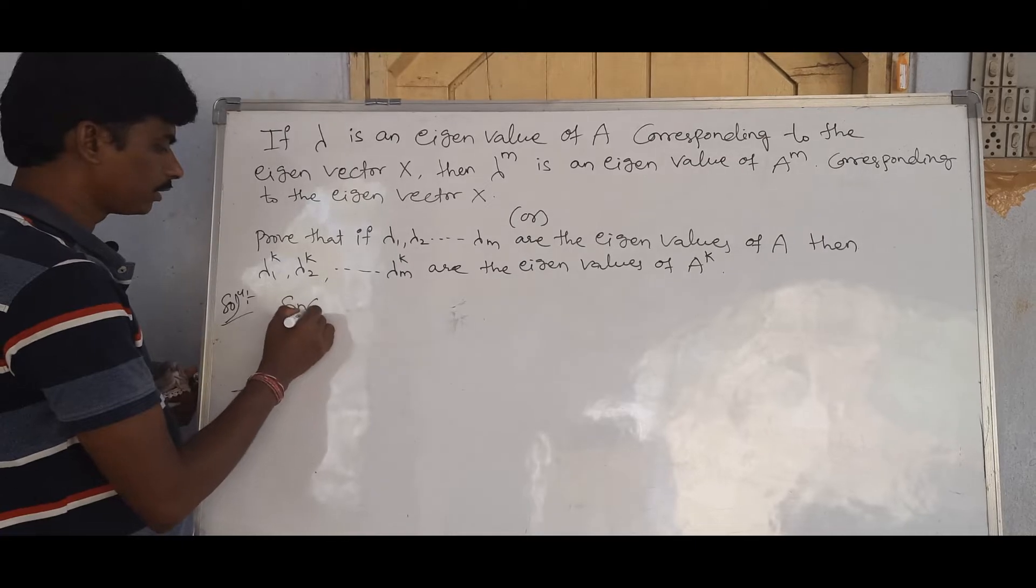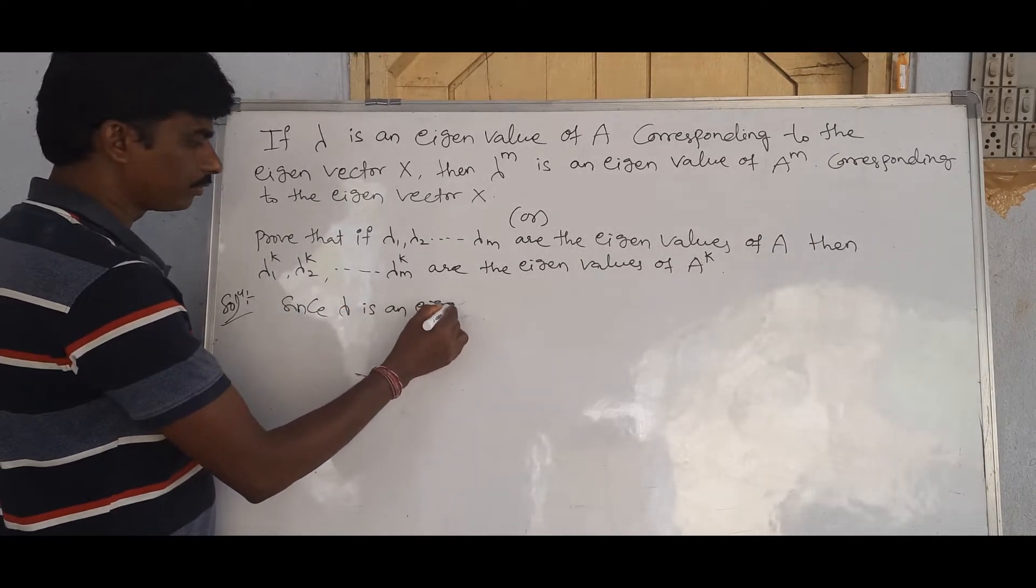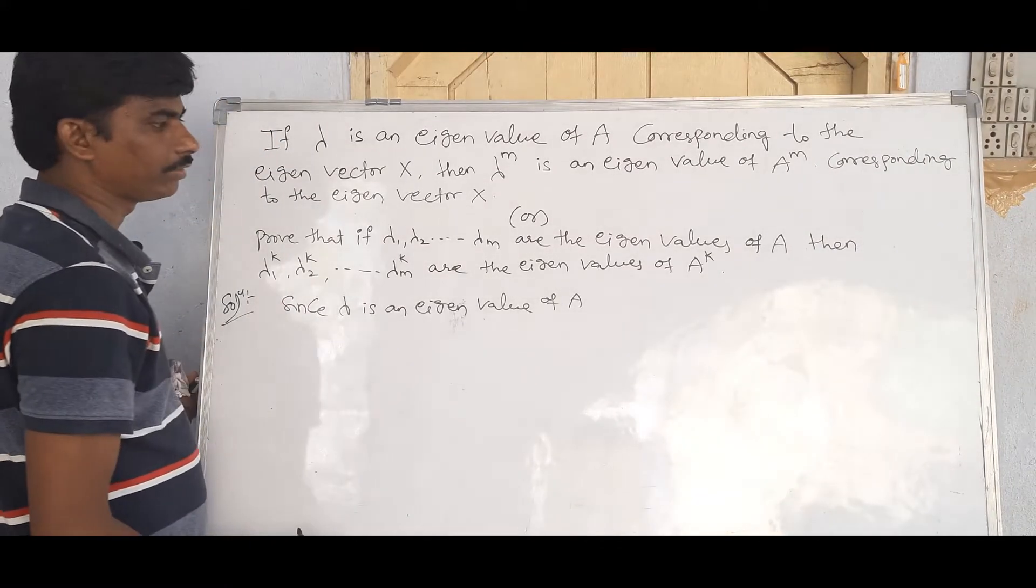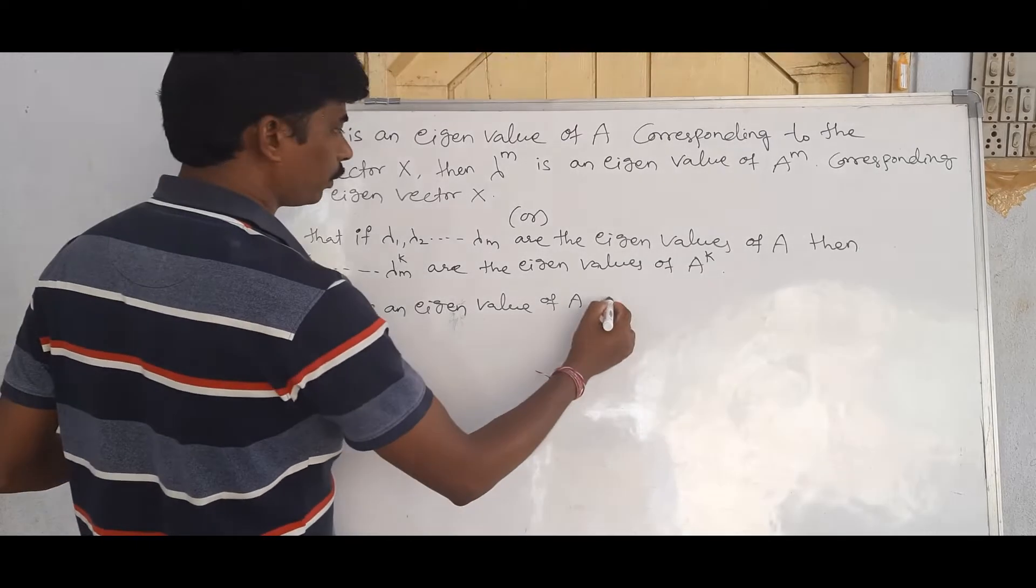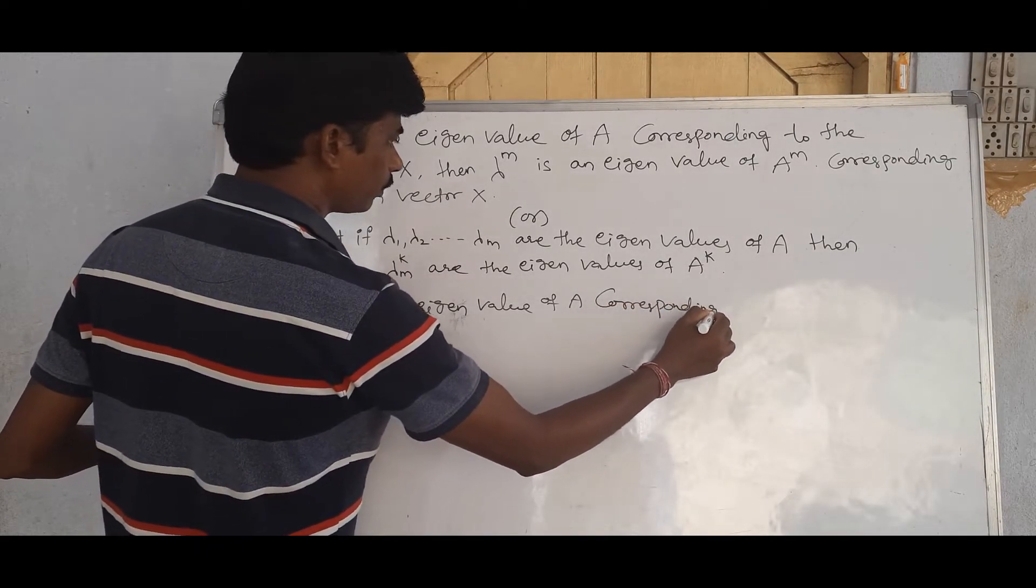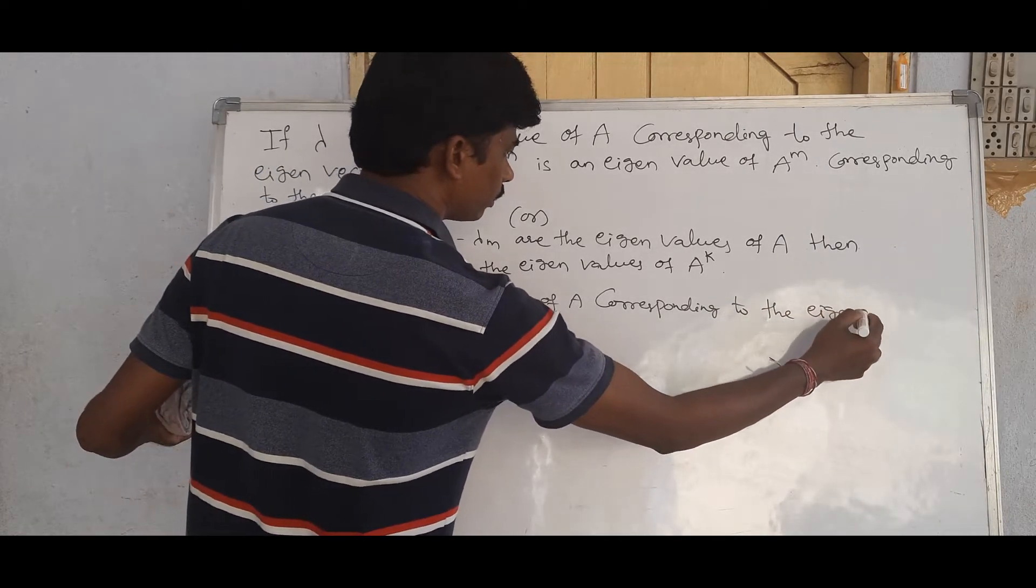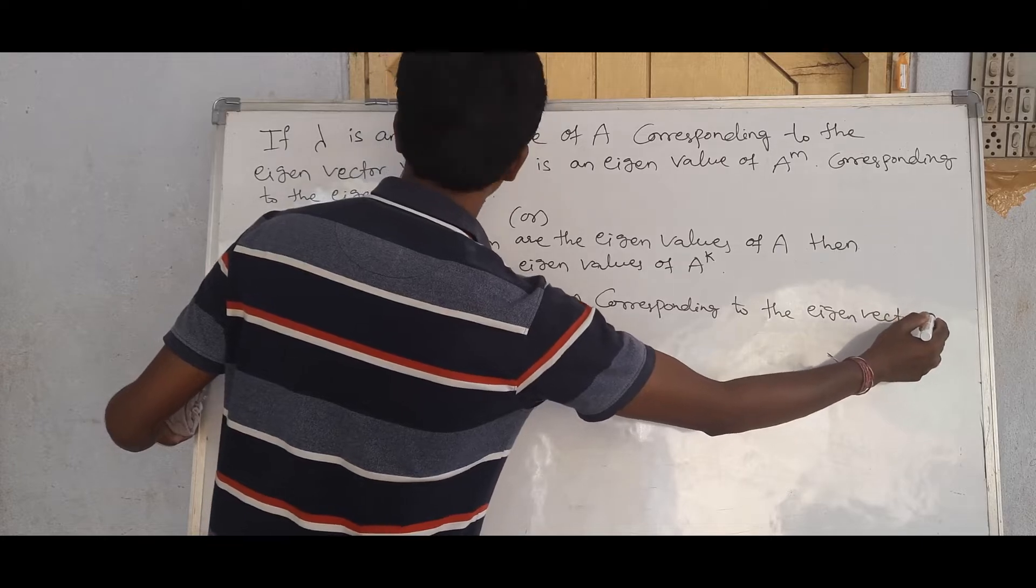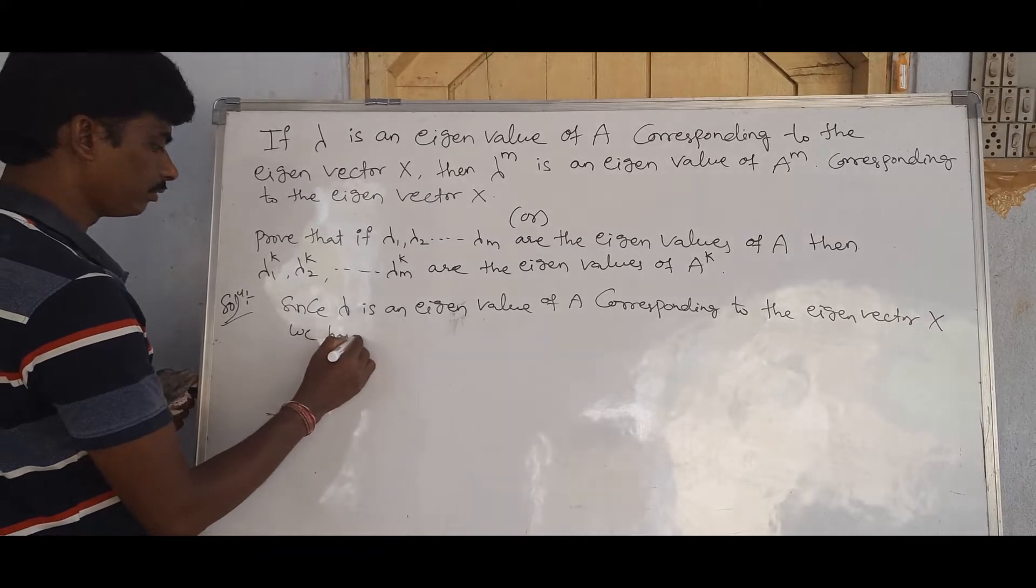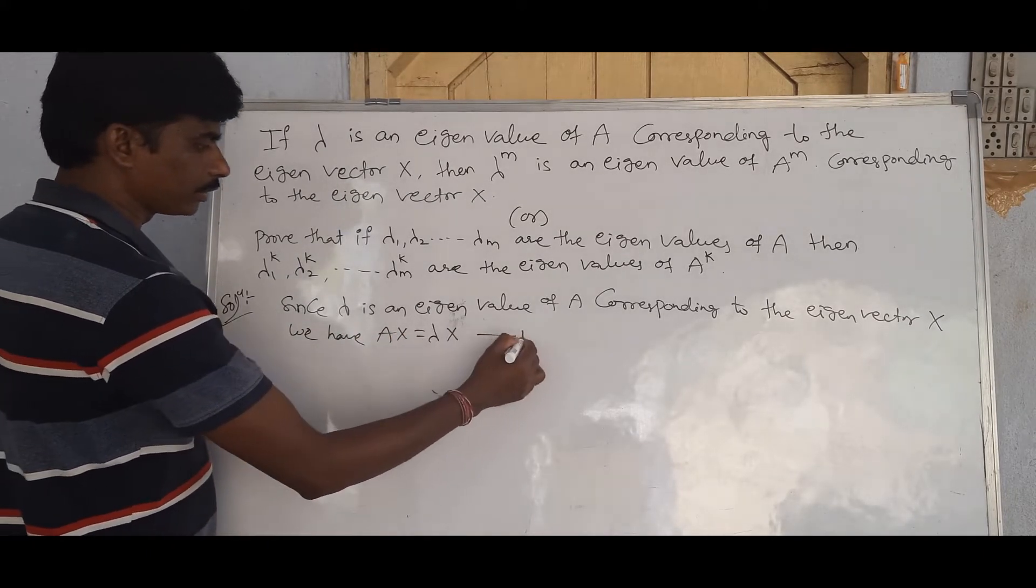Since lambda is an eigenvalue of capital A corresponding to the eigenvector capital X, we have AX equal to lambda X, equation number 1.